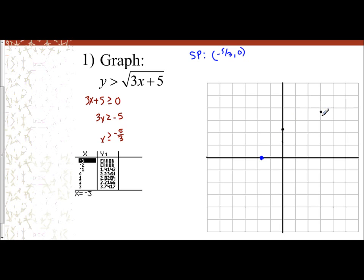Question is, am I using a dashed or solid line? And so since my inequality is greater than, I am using a dashed curve. And so I'm going to sketch with a dashed curve. And then we've got to figure out, how am I going to shade?